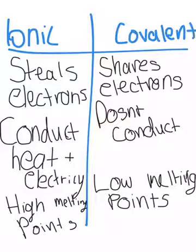But covalent shares electrons and does not conduct heat and electricity. It also has lower melting points. An example of ionic is NaF, sodium fluorine, which we just saw in the example before, and an example of covalent is water, which is H2O.